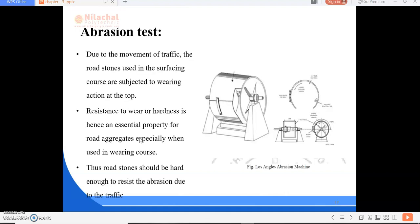First one is abrasion test. Due to the movement of traffic, the road stones used in the surfacing course are subjected to wearing action at the top. Resistance to wear or hardness is an essential property for road aggregates, especially when used in wearing course. Road stones should be hard enough to resist the abrasion due to traffic. This is the Los Angeles abrasion testing machine.